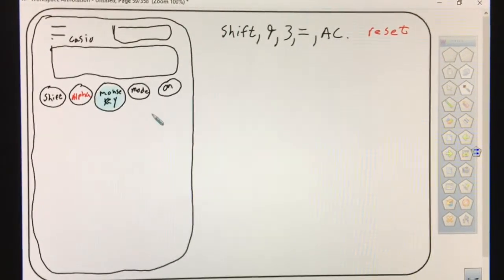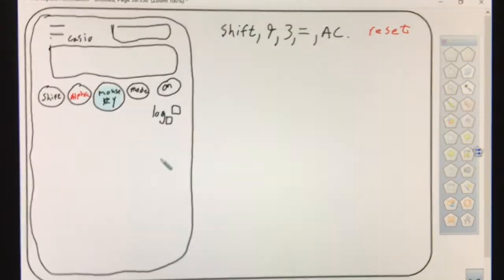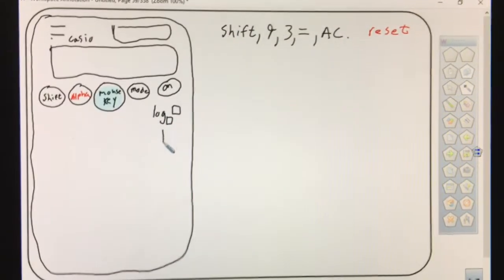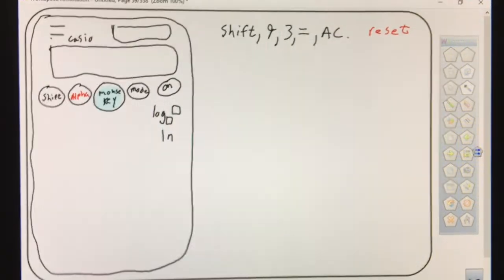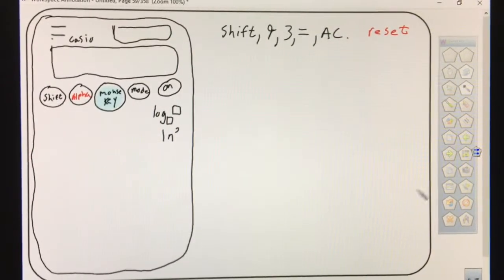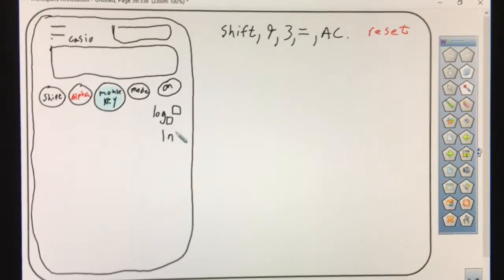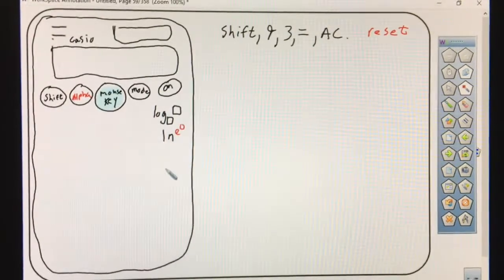Some other really nice buttons on the calculator: the log base button, right under orange. You'll use that a lot. The LN button, you'll use that a lot. If you hit shift LN, that brings up E. So if you're looking for the E button, that's shift LN to bring up E box, which is a good button.